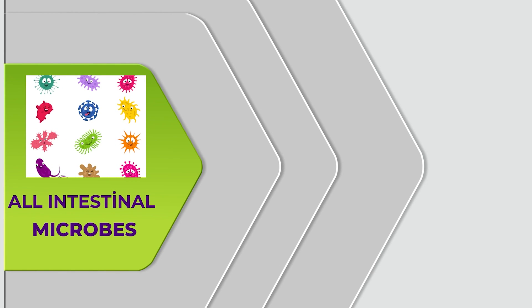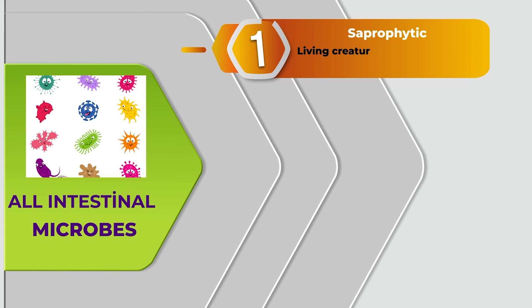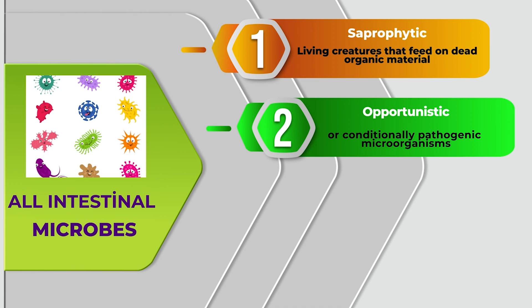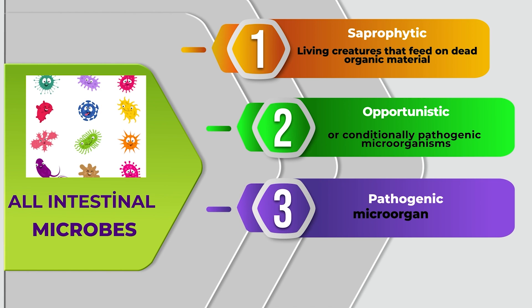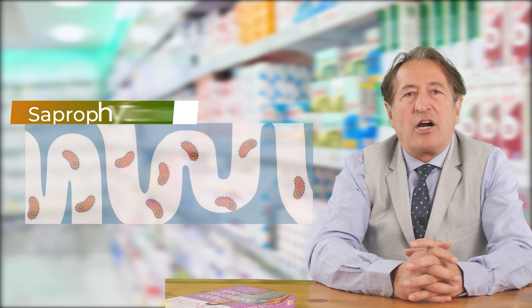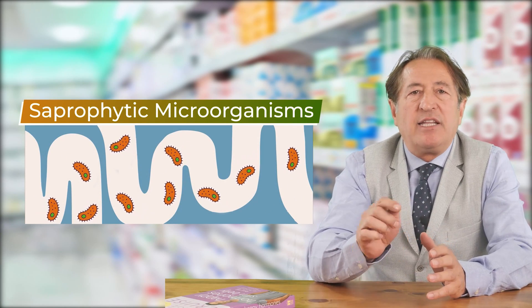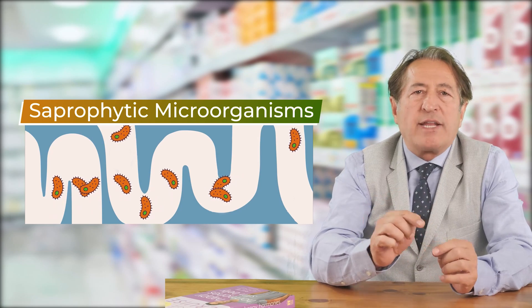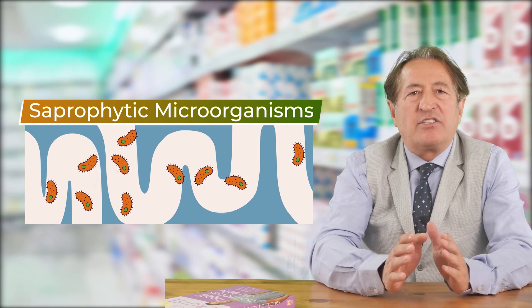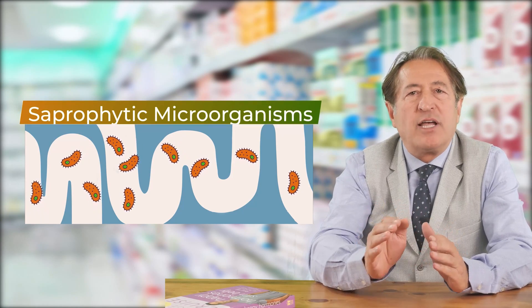All intestinal microbes can be divided into 3 groups based on their ability to cause disease. Saprophytic living creatures that feed on organic material. Opportunistic or conditionally pathogenic microorganisms. And pathogenic microorganisms. In a healthy person, saprophytic microorganisms are permanent inhabitants in the intestine which do not have pathogenic factors. These are good, friendly microbes that a person lives with.